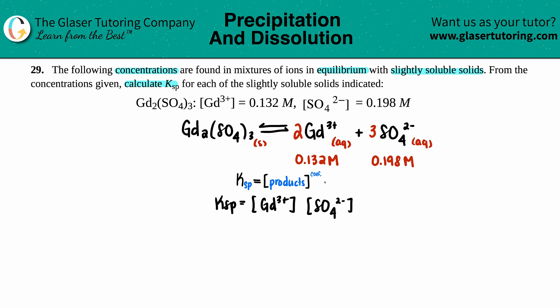Let's just raise each one now. Keep in mind that you had 2 Gds, so I have to take my Gd concentration and raise it to the second. I had 3 SO4s, so I have to take my SO4 concentration and raise it to the third. This concentration, just like they told us, 0.132 molarity. The sulfate concentration they told us 0.198, so I'm just going to use the numbers and plug in and solve.